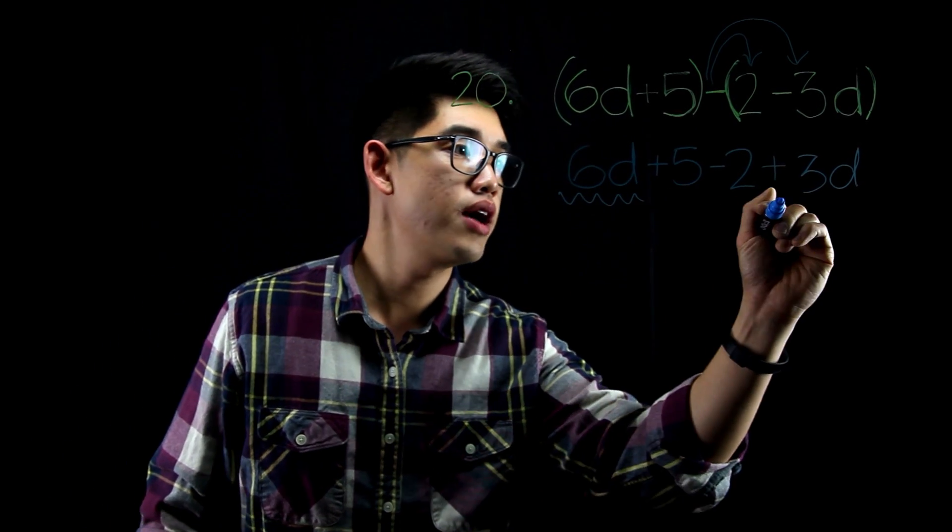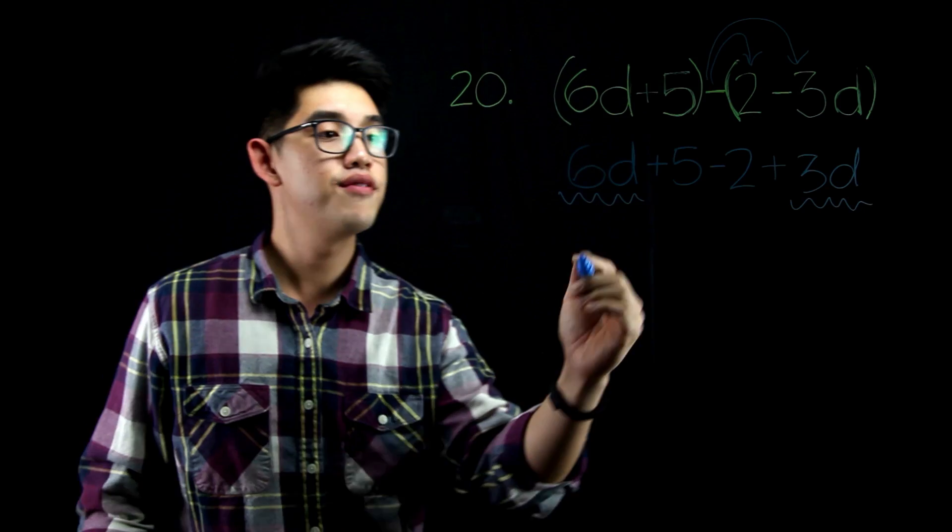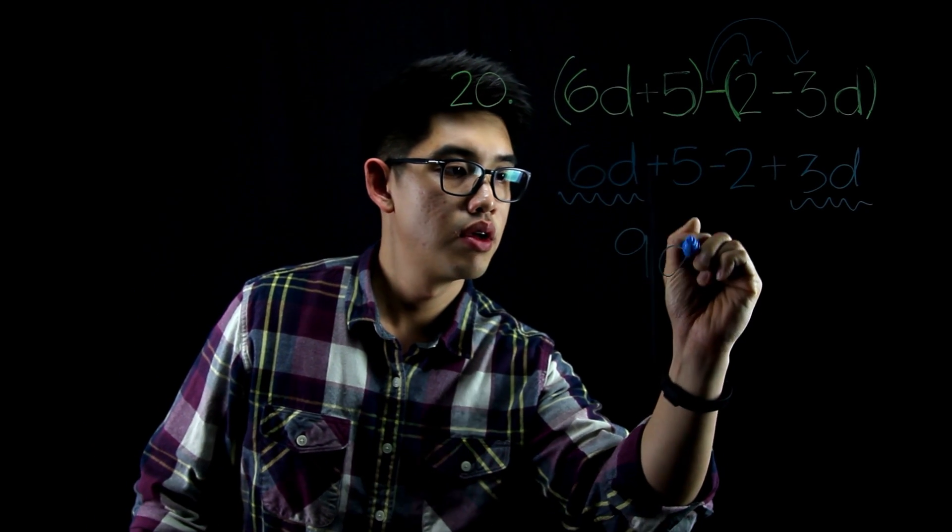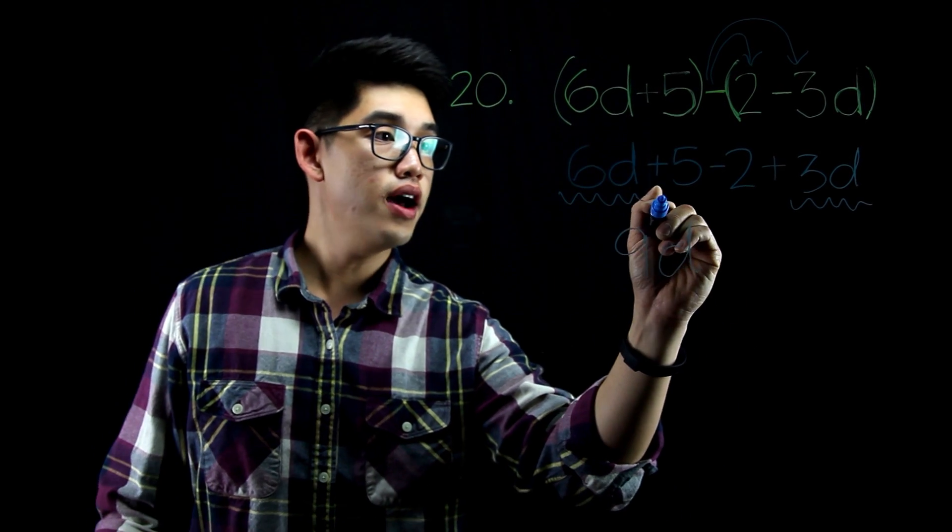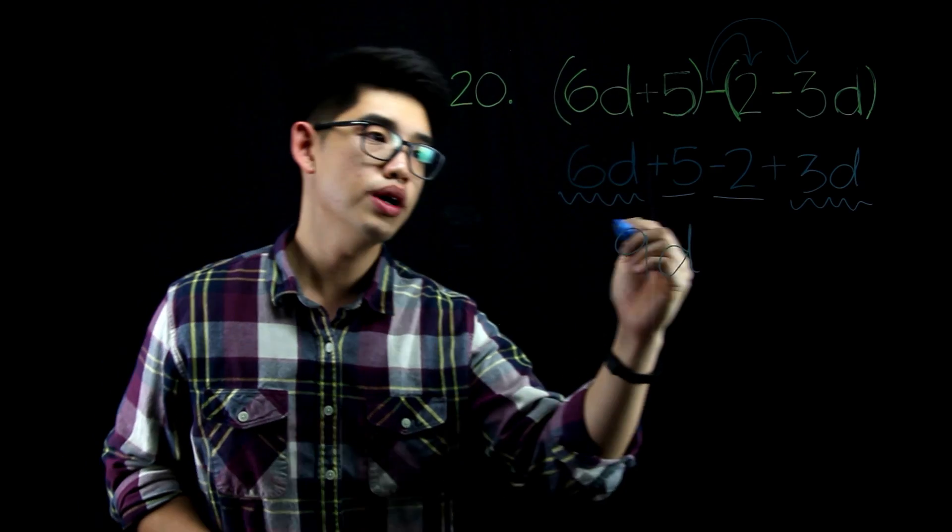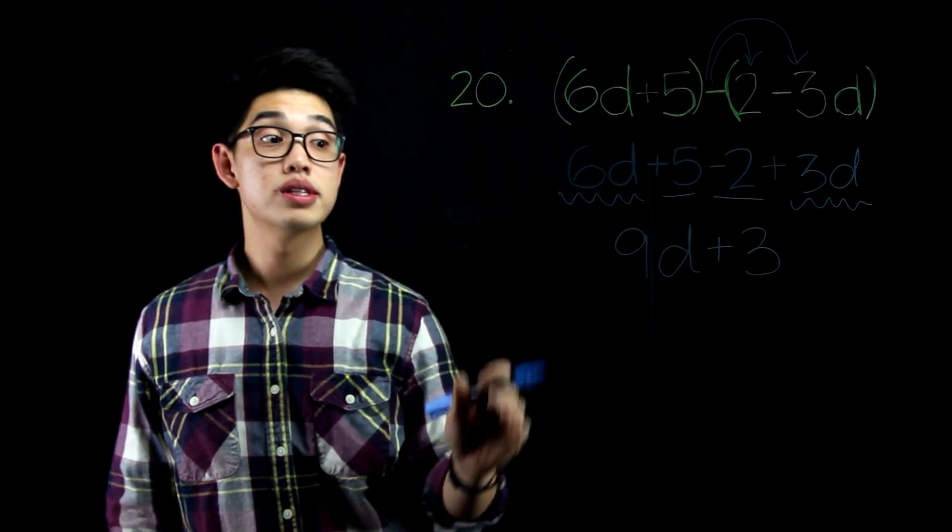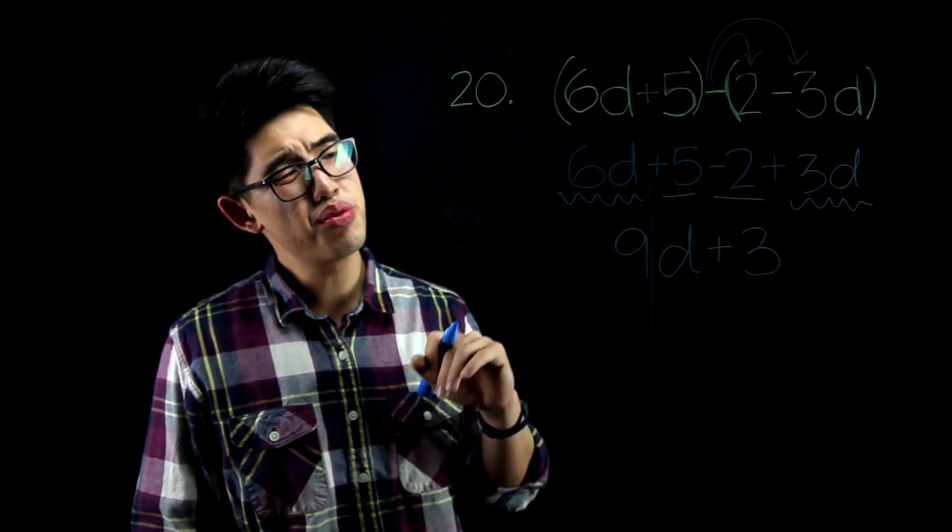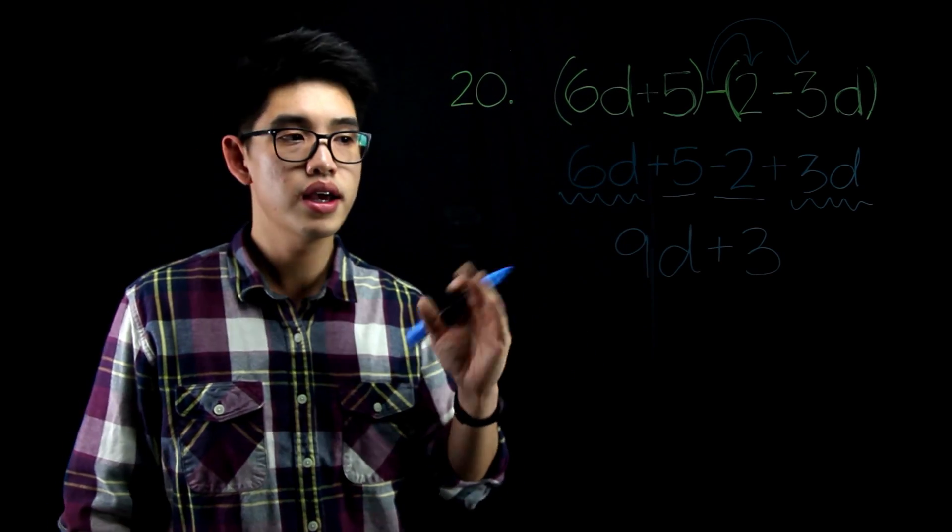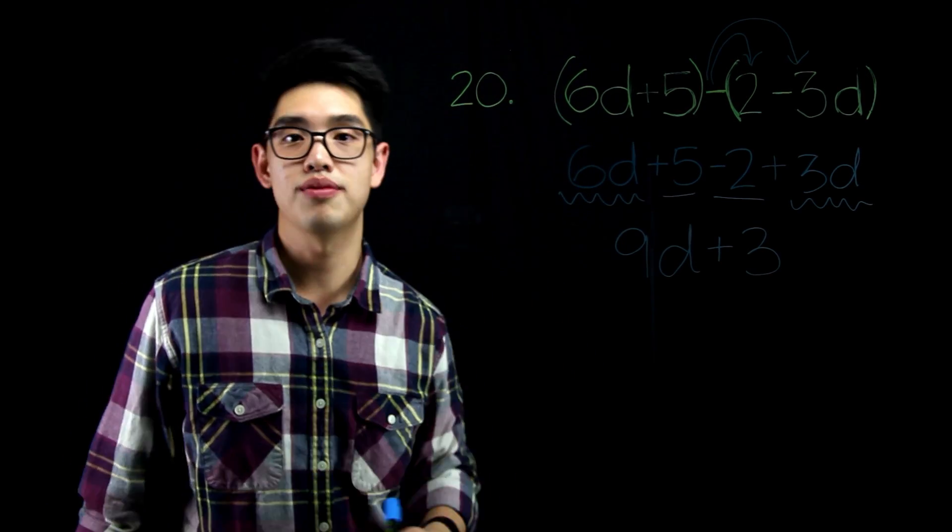I have 6d here. I have 3d here. All together, we have 9d. And then I have 5 here minus 2. 5 minus 2 is just 3, positive 3. So my answer is 9d plus 3. Or if you wrote 3 plus 9d, okay, that's the same thing too because of the commutative property.